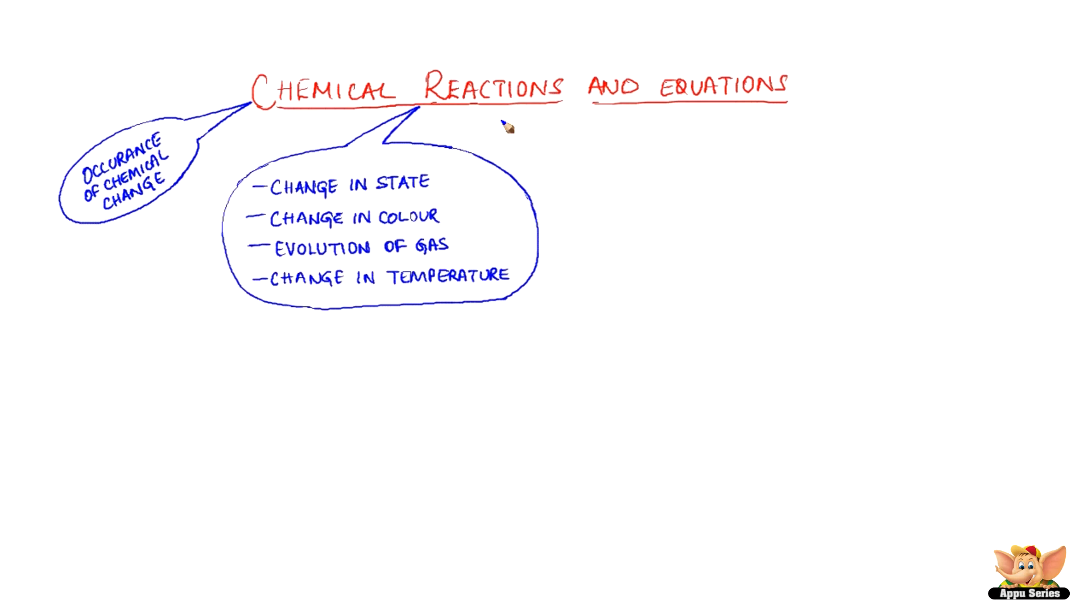When a chemical reaction takes place, we observe any of the following changes: change in state, change in color, evolution of gas, or change in temperature.